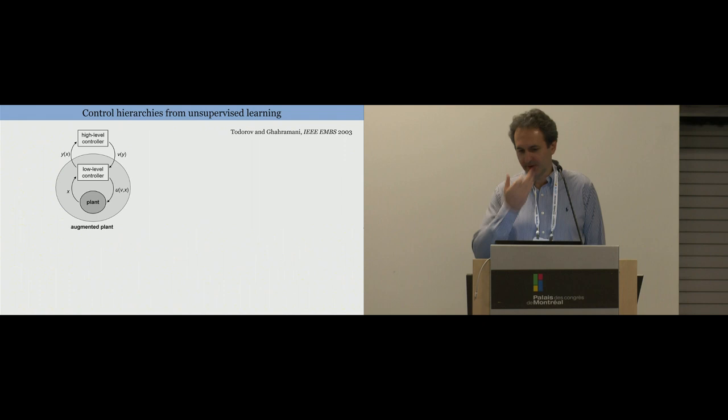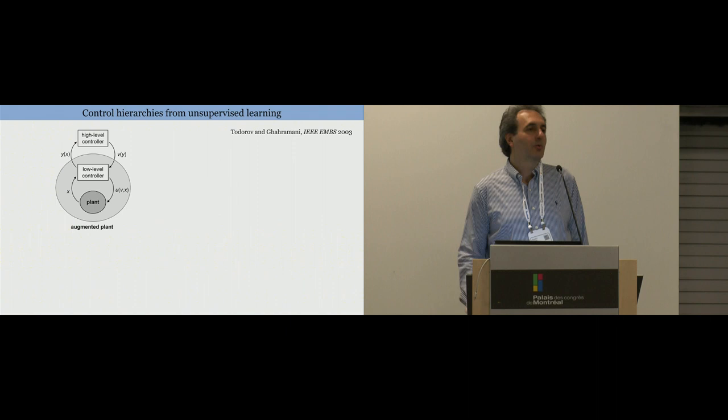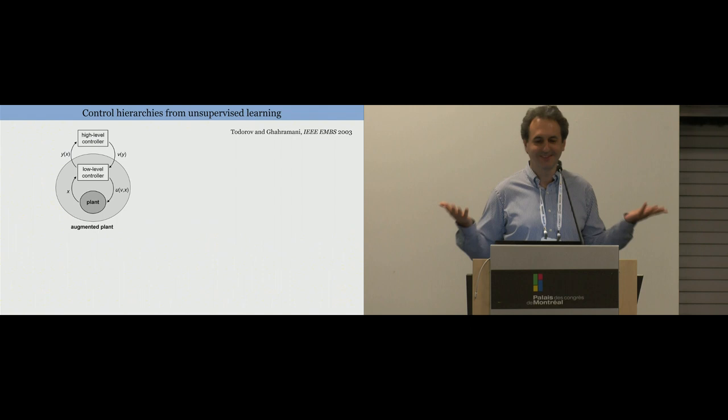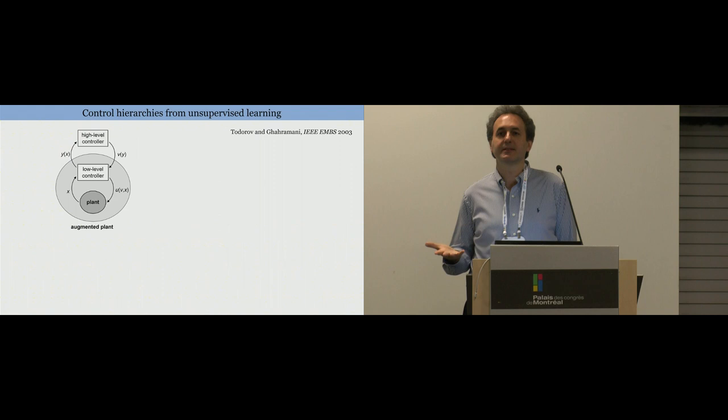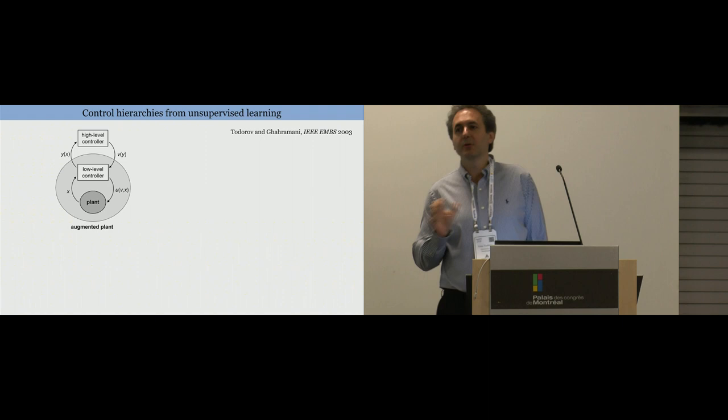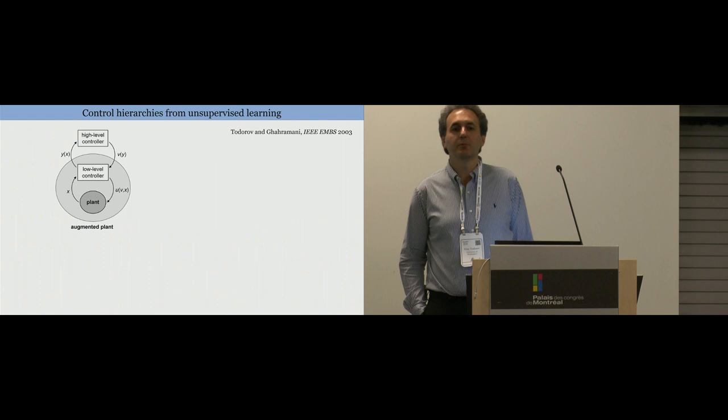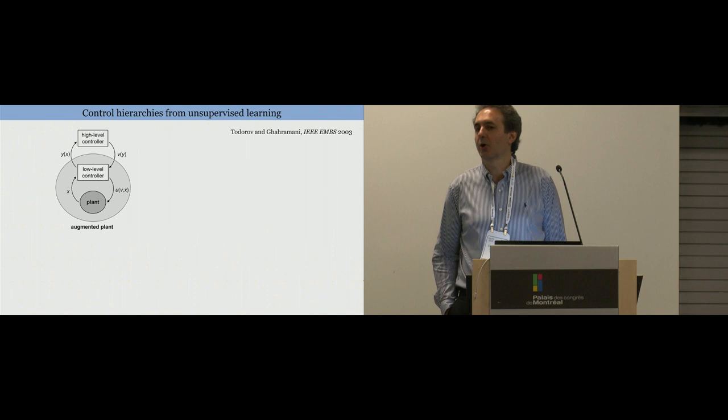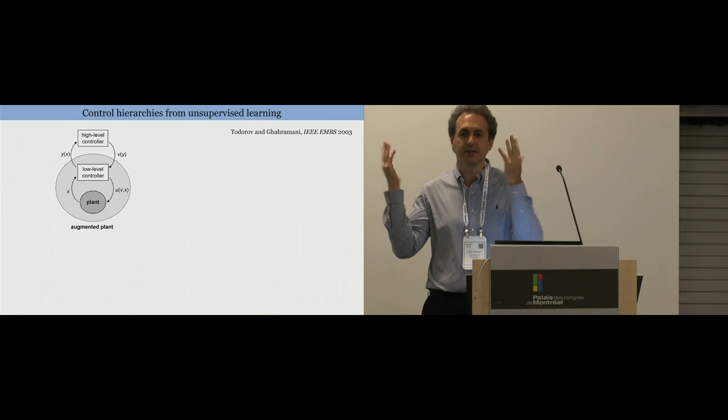Here is another take on this which is actually something I did ages ago when I was postdoc in the Gatsby unit with Zoubin Ghahramani and Geoff Hinton was there at the time and it was funny that these were the times when neural networks were dead, the future was going to be Bayesian. We all knew that except Geoff was still working on some silly neural networks like what are you doing? Anyway, good thing he didn't listen to anyone. So this was an attempt to come up with some kind of control hierarchy from first principles using unsupervised learning.